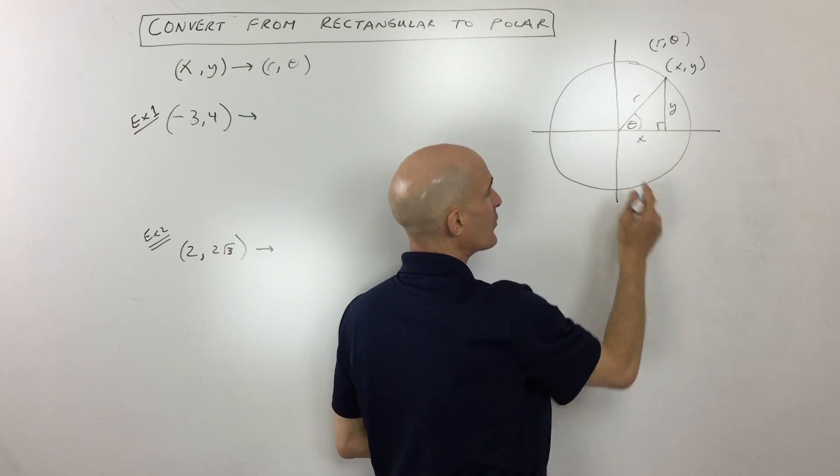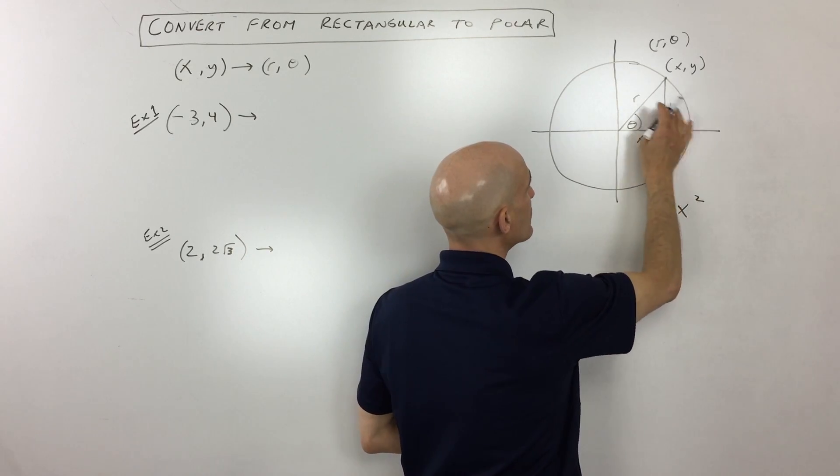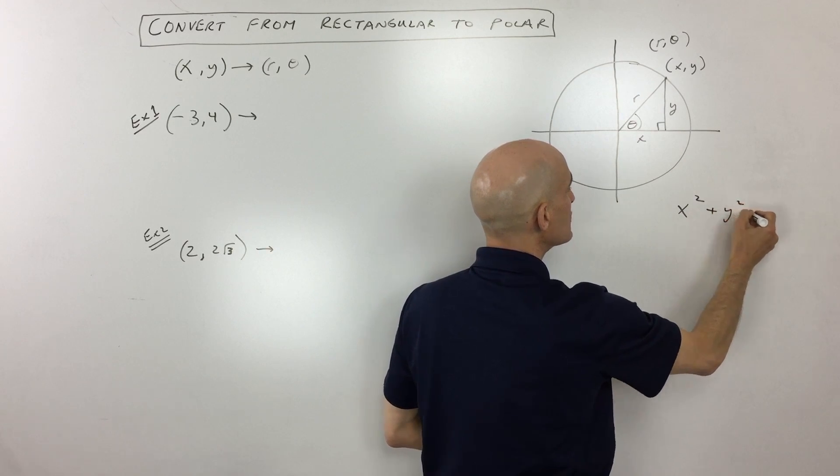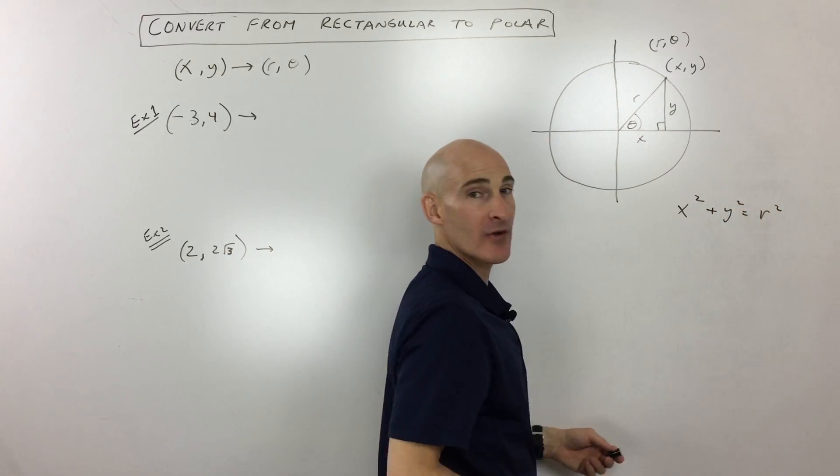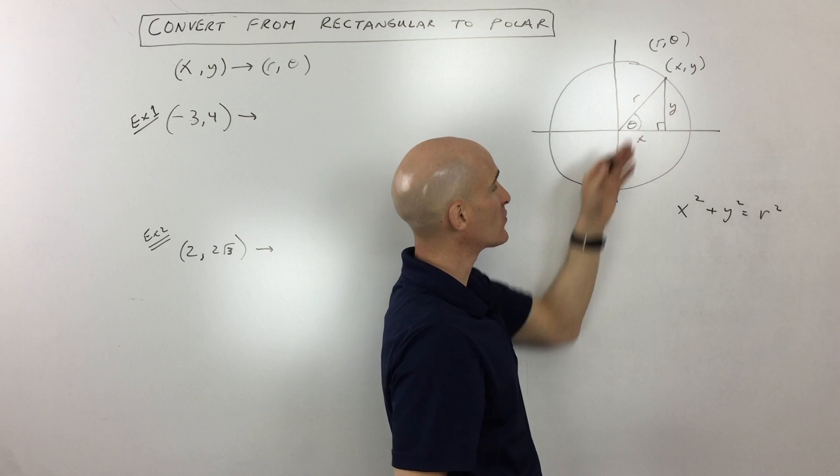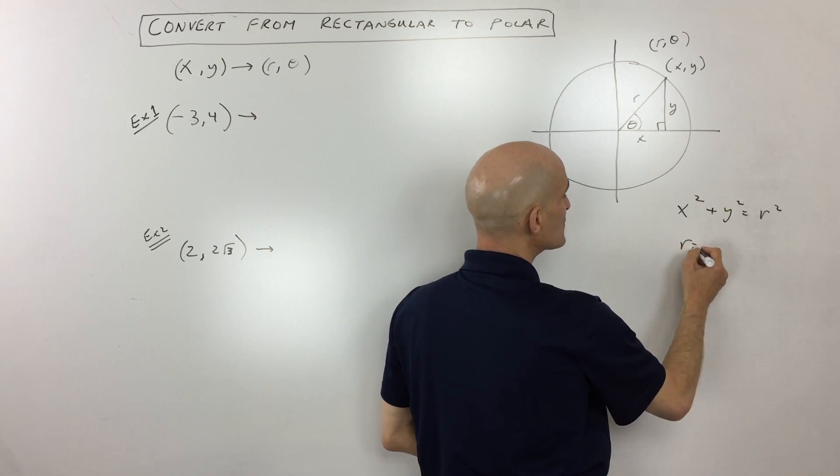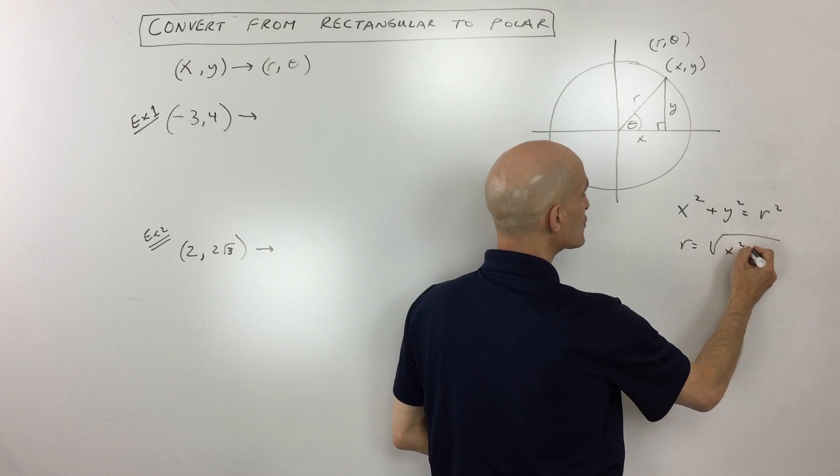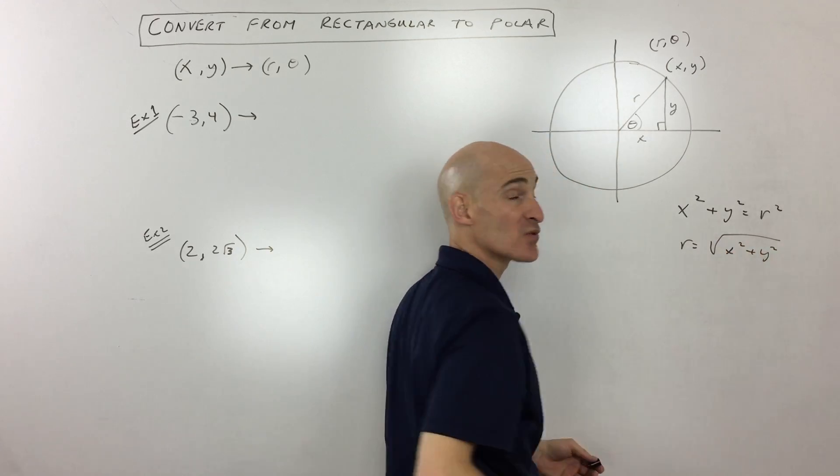Let's take a look at this triangle here, and this will tell us how to convert. We've got x squared plus y squared is equal to r squared, right? Because of Pythagorean theorem, a squared plus b squared equals c squared. And if you take the square root of both sides, you can see that the radius is equal to the square root of x squared plus y squared.